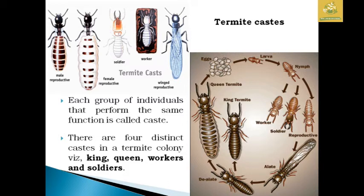They have a king termite and a queen termite. The queen lays eggs which develop into larvae and nymphs, and then form workers, soldiers, and reproductives. The reproductive forms develop into winged reproductives known as alates. After the swarming process, they de-alate and are converted into a king termite and queen termite in the colony. Each group of individuals performing the same function is called a caste. The four distinct castes are king, queen, workers, and soldiers.